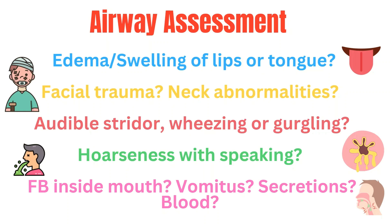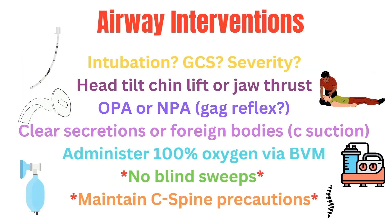Look inside — is there an obvious foreign body, visible blood, secretions, or vomit? Does anything look abnormal? When it comes to interventions, at the top is intubation. Is their mentation so decreased that they need to be intubated? Or perhaps their oral swelling is rapidly getting worse and you have to intubate to maintain an airway? On the other hand, can you do a simple head-tilt chin lift or a jaw thrust to open the airway? Perhaps insert an OPA or NPA, whatever the situation calls for, and provide oxygen via a bag valve mask.